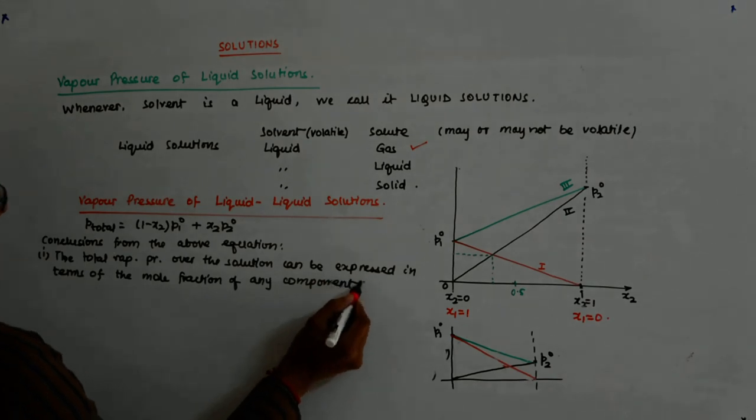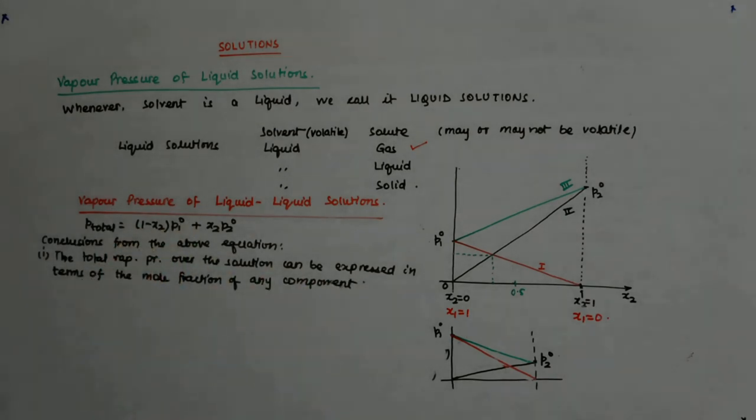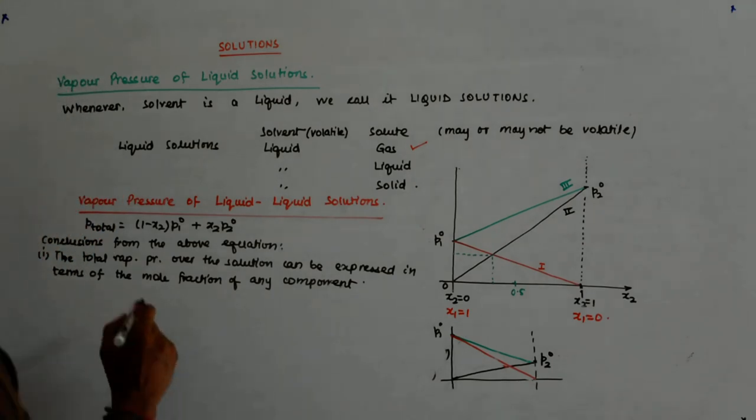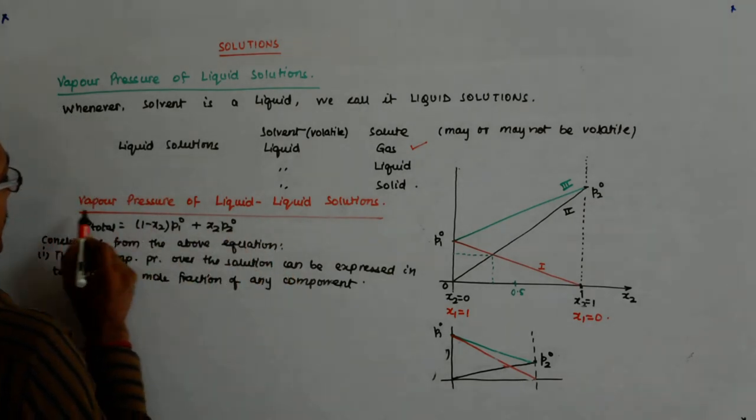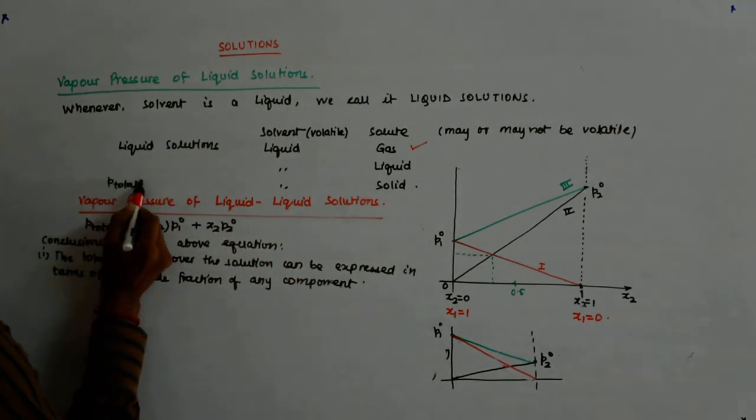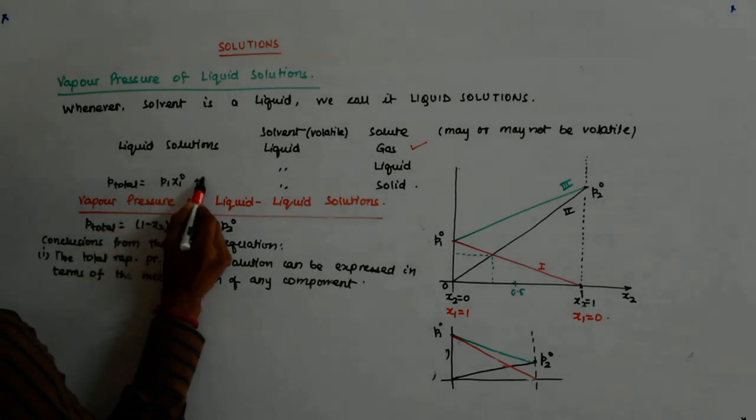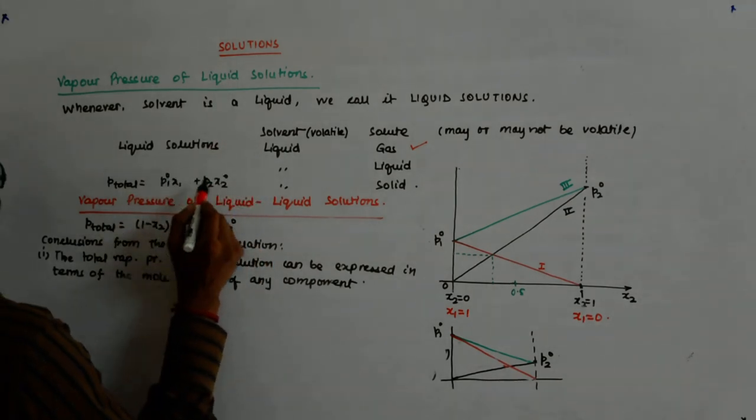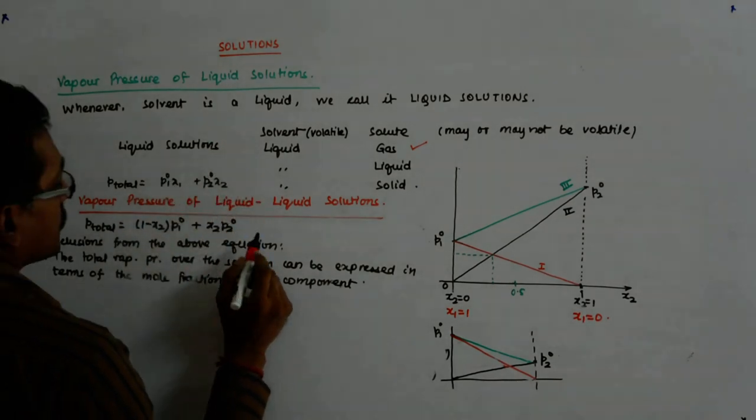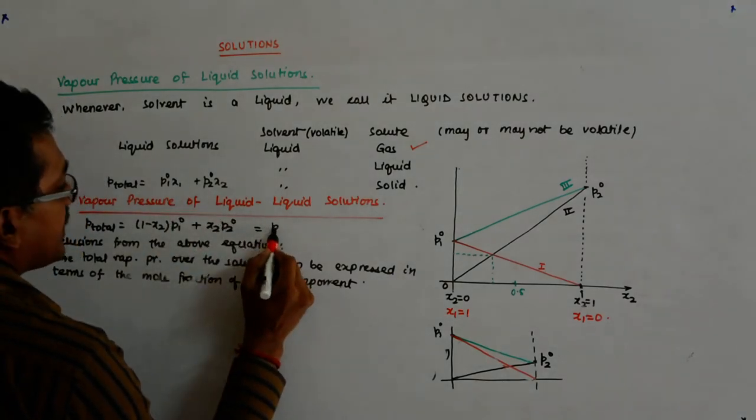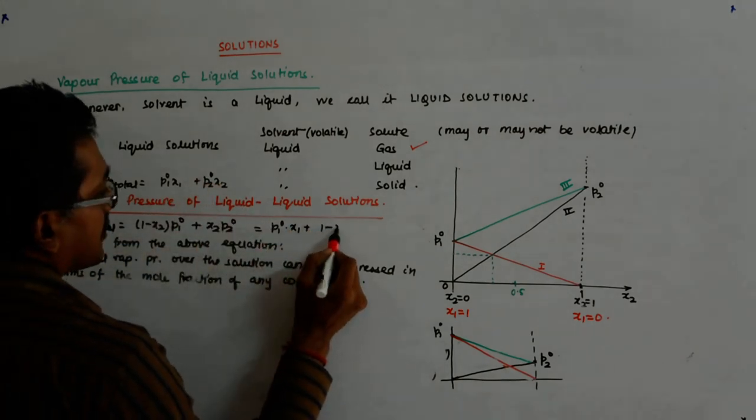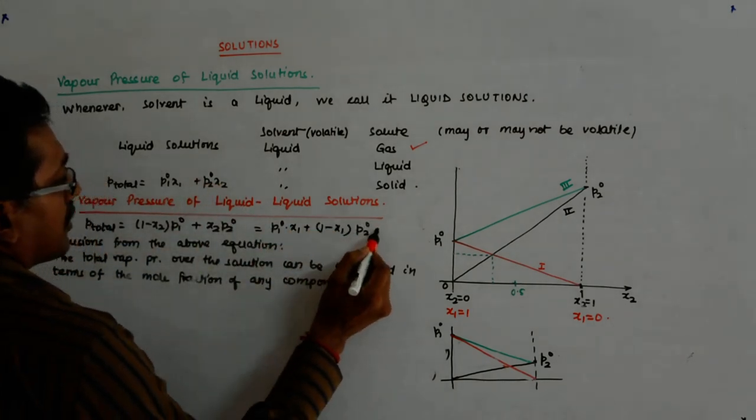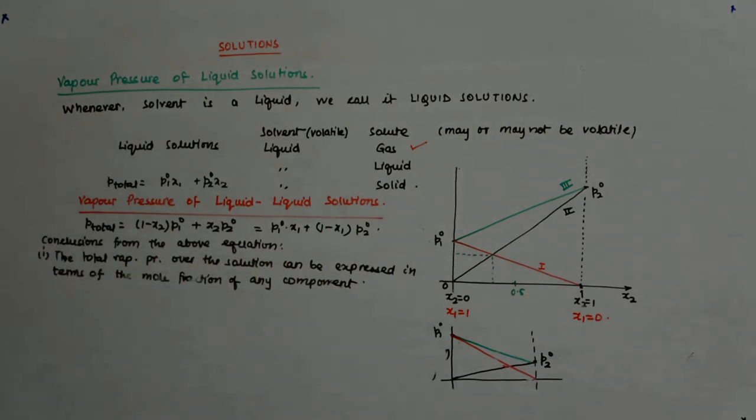Here we have expressed it in terms of mole fraction of the second component. What if I had asked you to express it? So, let us express it in terms of the first component. Because see, we had P total is equal to P1O into x1 plus P2O into x2. So, I could have written it as P1O into x1 plus this is 1 minus x1 into P2O. So, that is what they are trying to say.